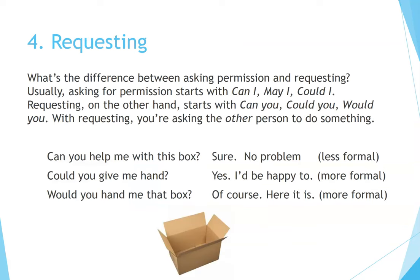4. Requesting. What's the difference between asking permission and requesting? Usually, asking for permission starts with 'Can I,' 'May I,' or 'Could I.' Requesting, on the other hand, starts with 'Can you,' 'Could you,' or 'Would you.' With requesting, you are asking the other person to do something. Less formal: 'Can you help me with this box?' — 'Sure. No problem.' More formal: 'Could you give me a hand?' — 'Yes, I'd be happy to.' More formal: 'Would you hand me that box?' — 'Of course. Here it is.'